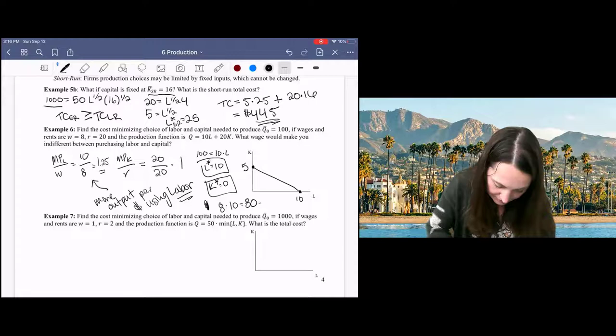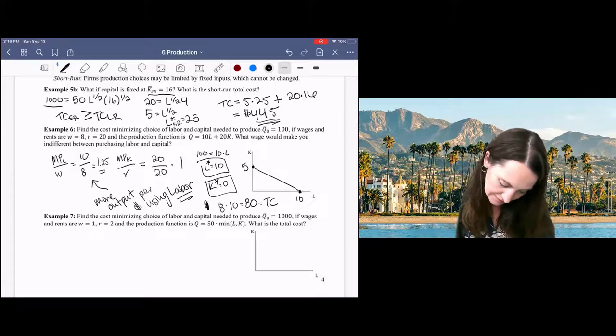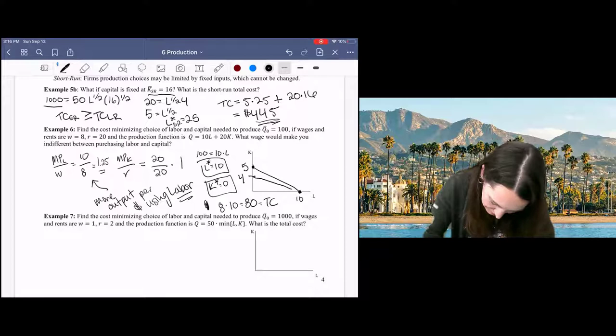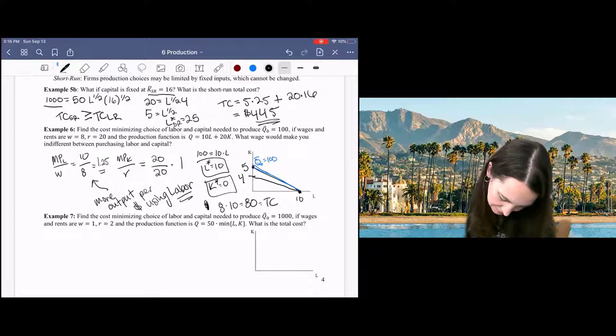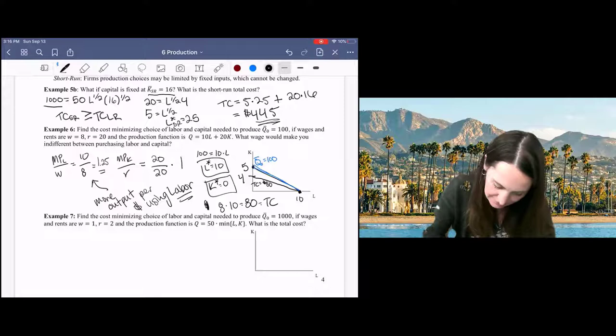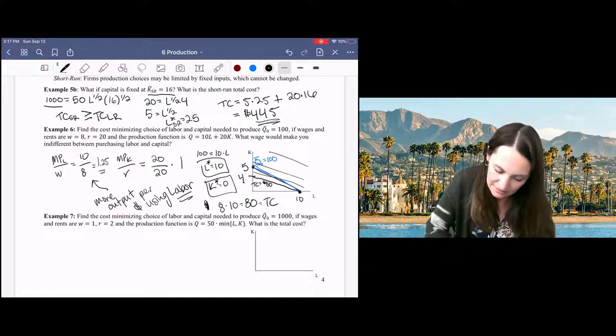So for $80, we could get 10 units of labor, or we could get 4 units of capital. So this is our iso-quant here, Q equals 100, and our iso-cost curve is total cost equals 80. You can see, this would be the lowest total cost curve that still intersects our iso-quant.